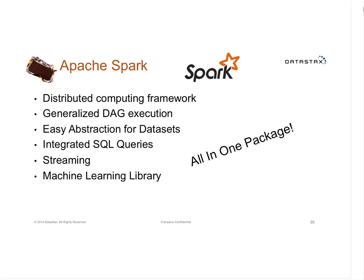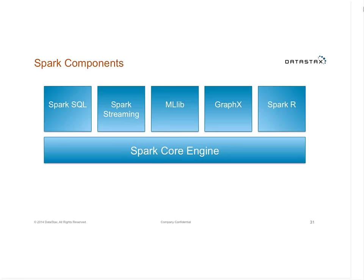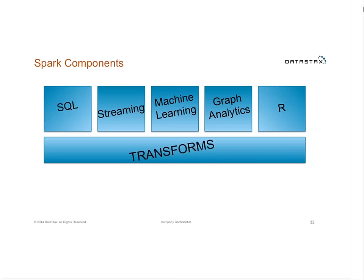So we talked about the peanut butter — let's talk about the chocolate. Spark is a distributed computing framework. Version 1.0 went GA last spring. It has a generalized execution model and can reuse data it has already pre-calculated. People talk about Spark being an in-memory system, but it actually does work off disk too — the key thing is it's very efficient at reusing memory, and that pays a lot of dividends. There's also an easy abstraction called data frames. The Spark ecosystem includes a core, a SQL engine, a streaming engine, and components for machine learning, graph analytics, and R/statistics.